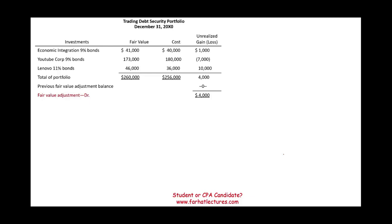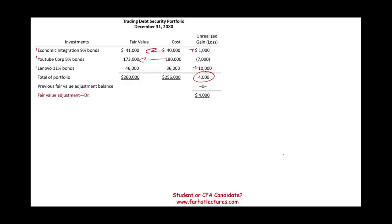This is a trading debt securities portfolio with three investments. The Economic Integration Forum — we paid $40,000, fair value is $41,000, a gain of $1,000. YouTube Corp. — we paid $180,000, fair value is $173,000, a loss of $7,000. Lenovo Bonds — we paid $36,000, fair value is $46,000, a gain of $10,000. Overall, netting them out, we have a net gain of $4,000. Total fair value is $260,000; total cost is $256,000.